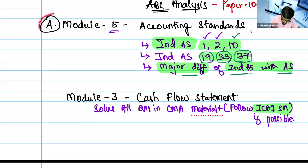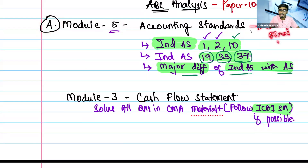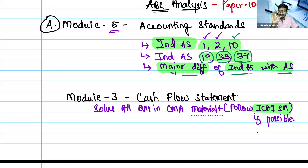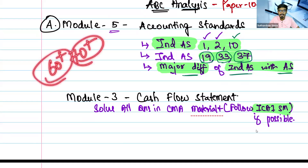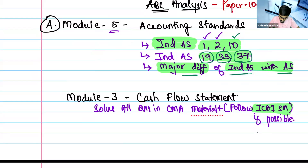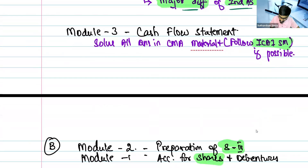After completing the A category and module 5 — because if you qualify CMA final, in paper CFR you need to study Ind AS for 25% of the weightage — so study accounting standards as a first preference. If you are scoring an exemption of 70 plus or 60 plus, it depends on this AS part. Give it focus. Then module 3 is cash flow statement. For cash flow, you can use CMA material and then ICAI study material — you will find a good number of questions.